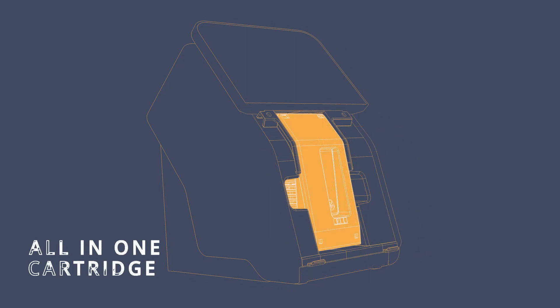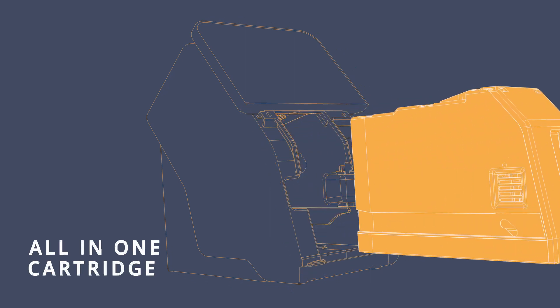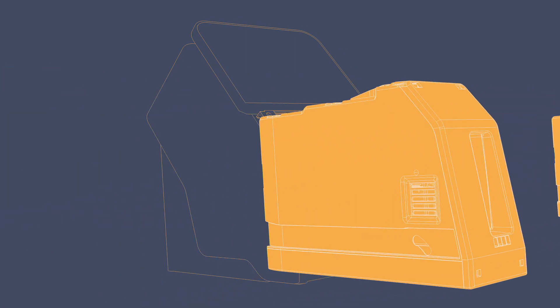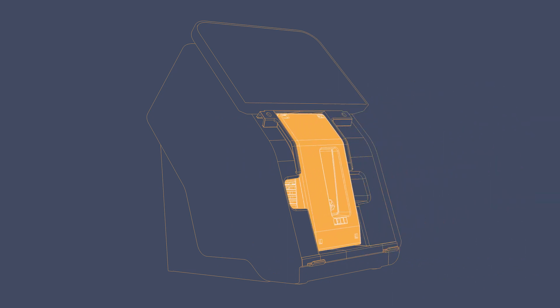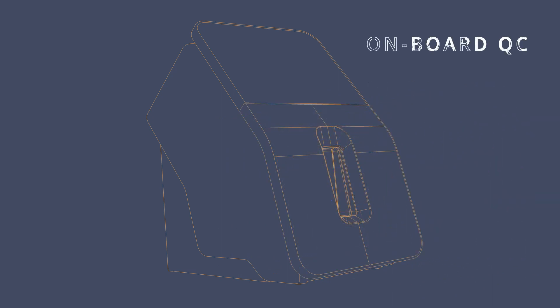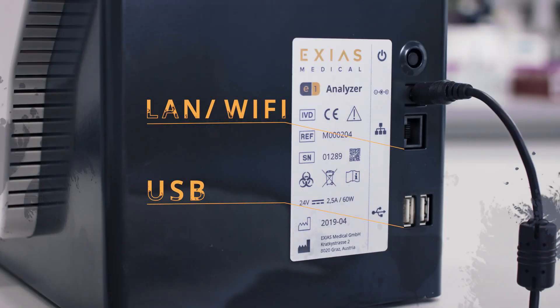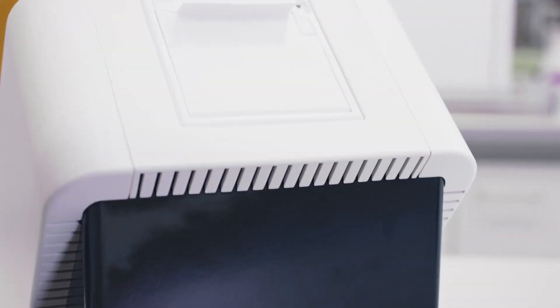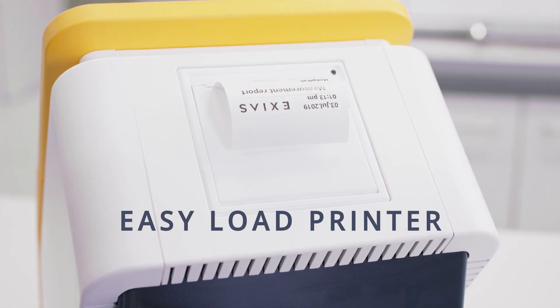The all-in-one cartridge, which can easily be replaced in a moment, includes all maintenance parts like sensors, reagents, waste, and even quality controls. The system is equipped with full data connectivity and a built-in easy-load printer.